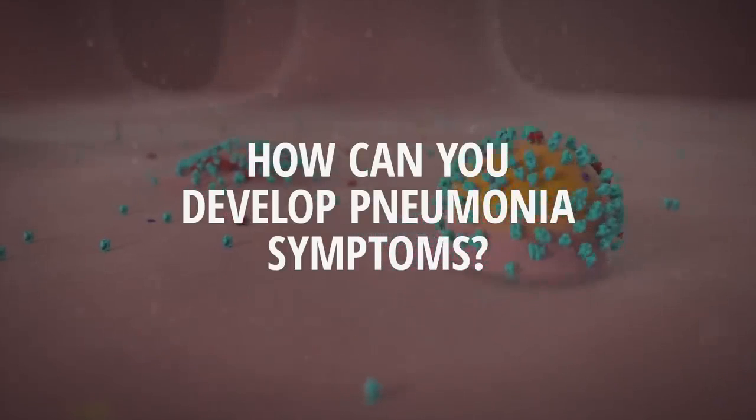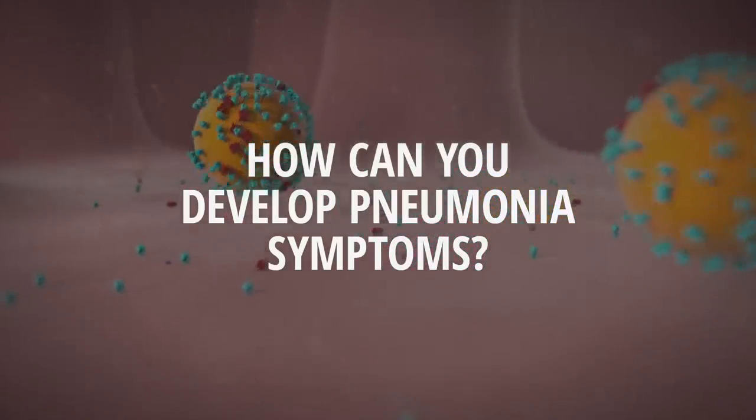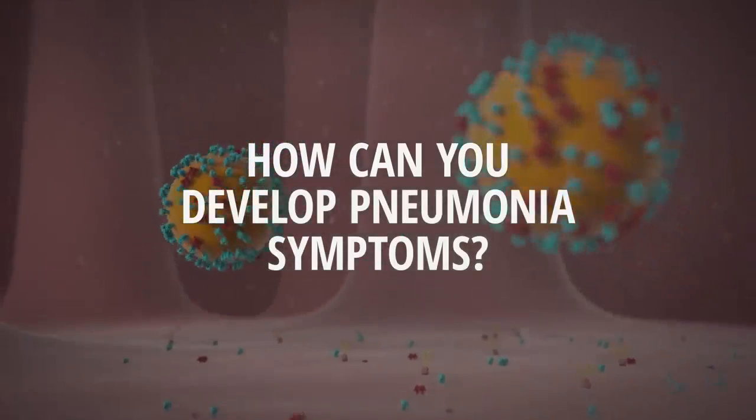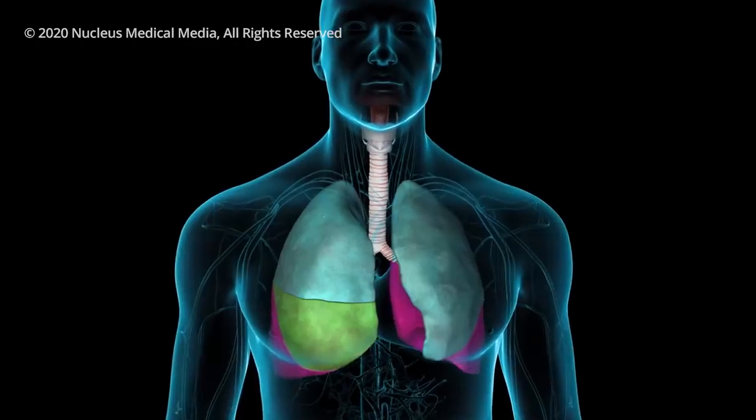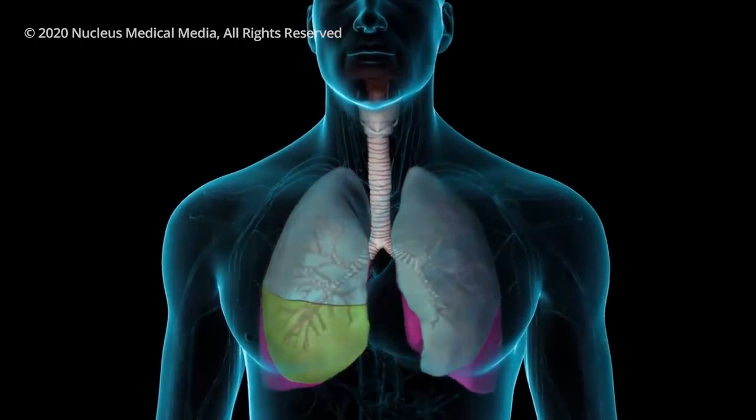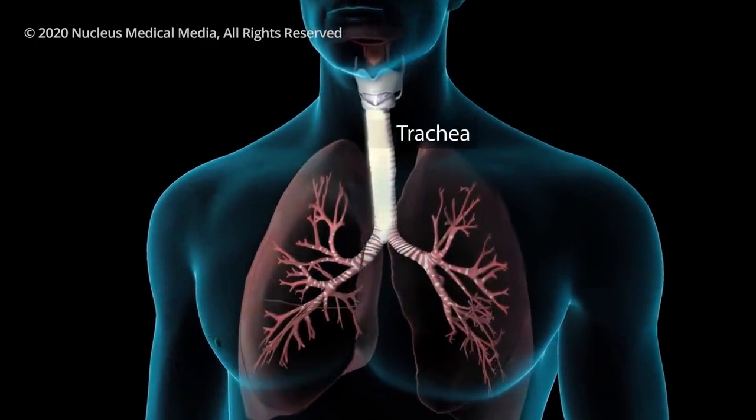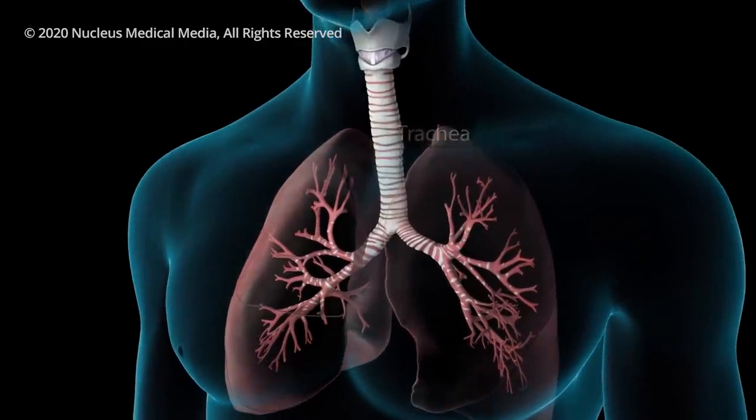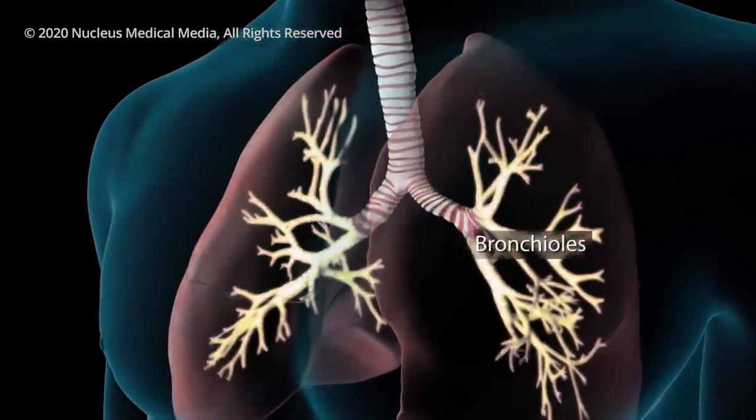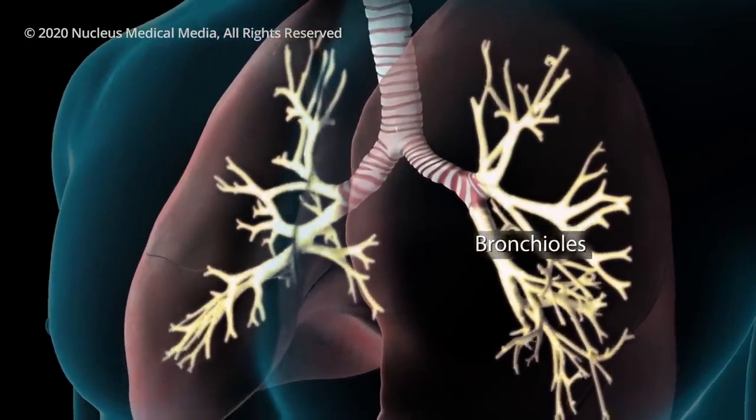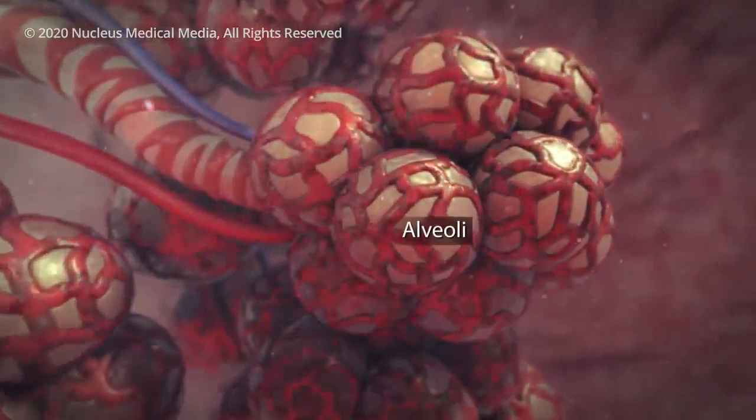Now, with the virus spreading in your body, how can you develop pneumonia symptoms? For this, we'll have to look into your lungs. Each lung has separate sections called lobes. Normally, as you breathe, air moves freely through your trachea or windpipe, then through large tubes called bronchi, through smaller tubes called bronchioles, and finally, into tiny sacs called alveoli.